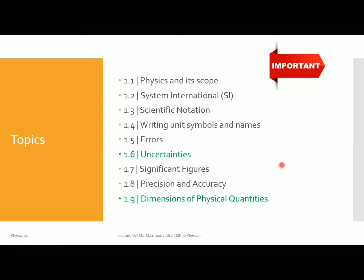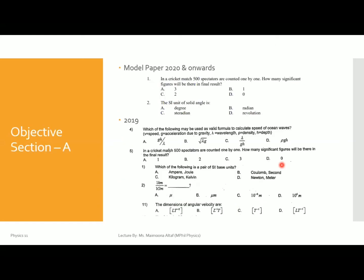Now let us discuss the paper section-wise and also discuss some past papers of the Federal Board. Starting from the objective section, Section A — from the model paper there are two MCQs from this unit: the first is from significant figures and the second is from System International (SI) units. In the 2019 paper, questions appear in different versions, so there are many questions from that year — in total five MCQs across three different versions.